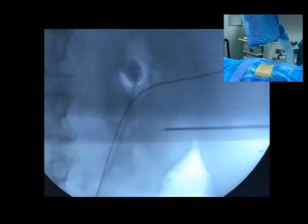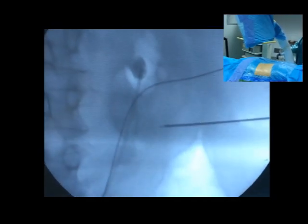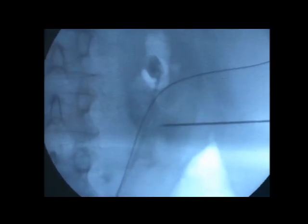The C-arm is repositioned 30 degrees towards the feet of the patient and the calyx is punctured. When the needle is in the calyx in both 90 and 30 degrees, we confirm the correct puncture.